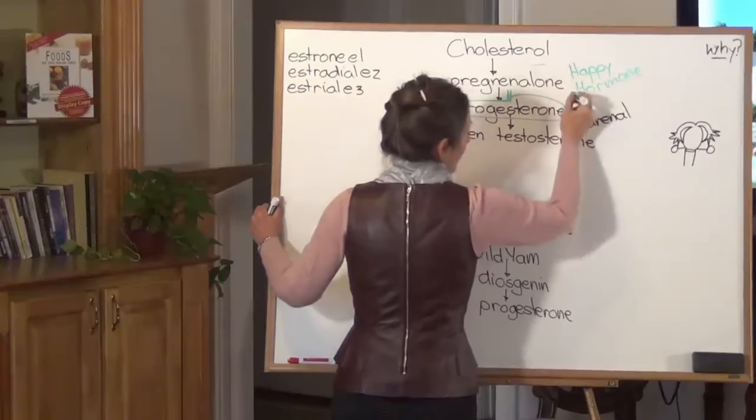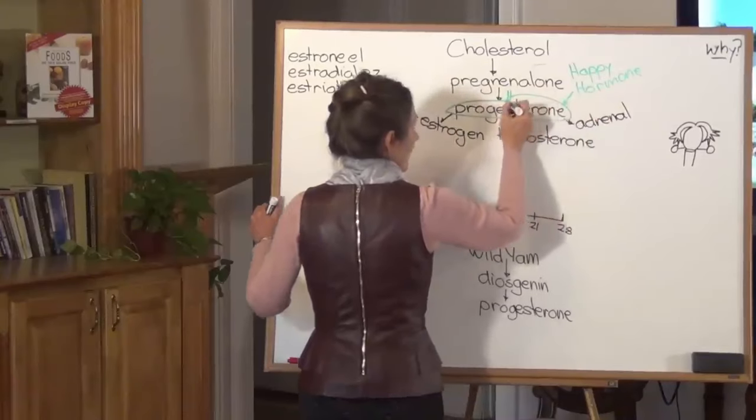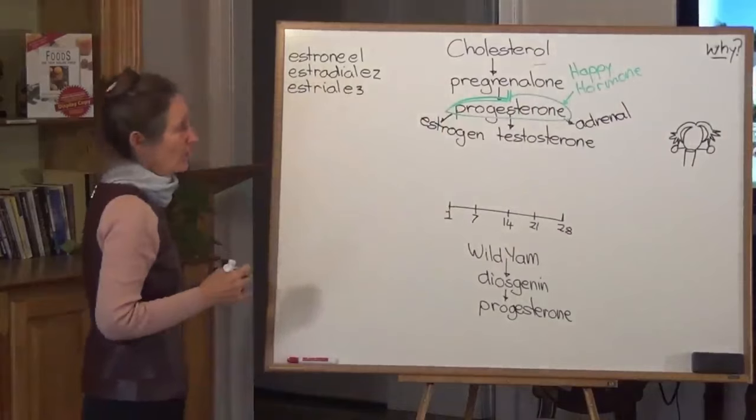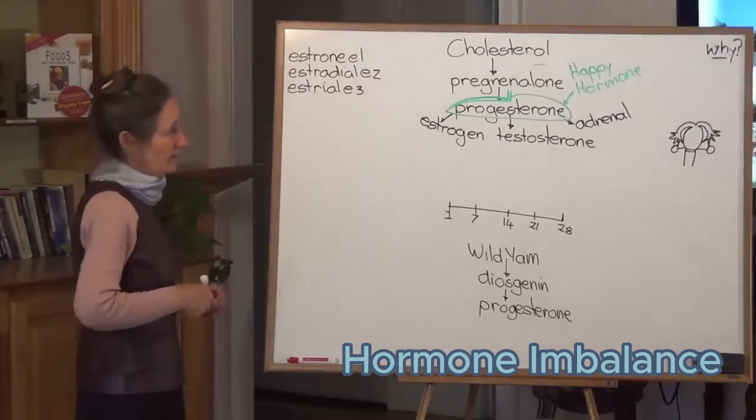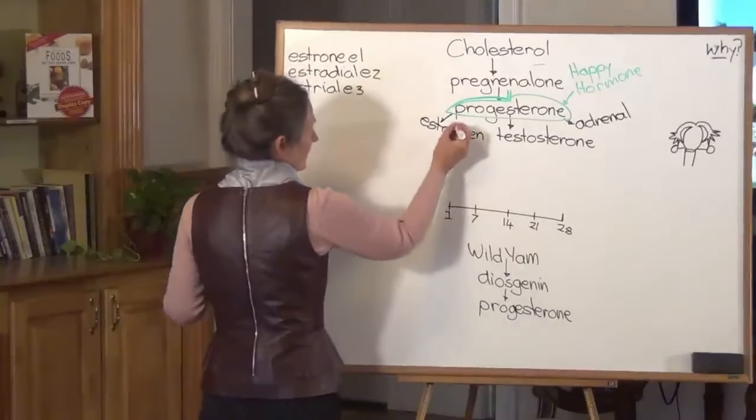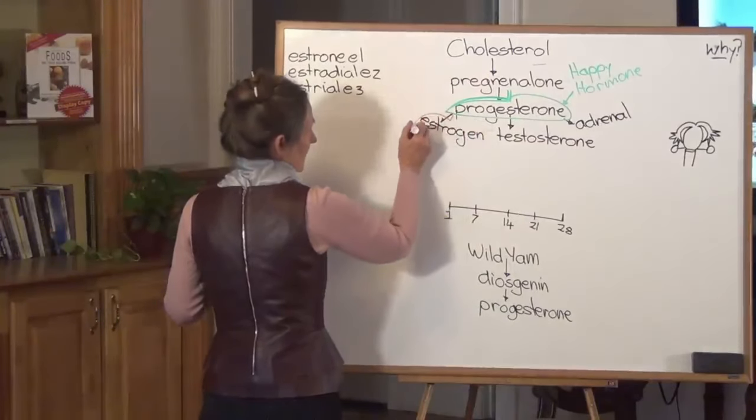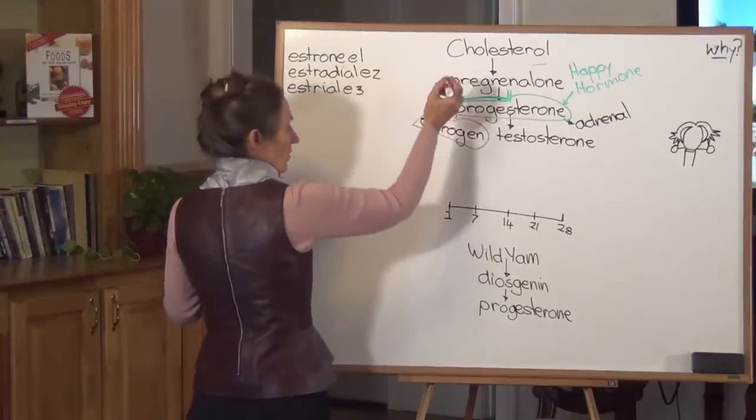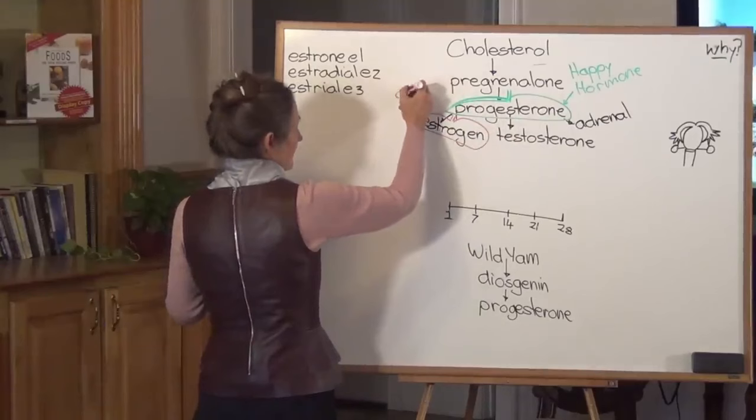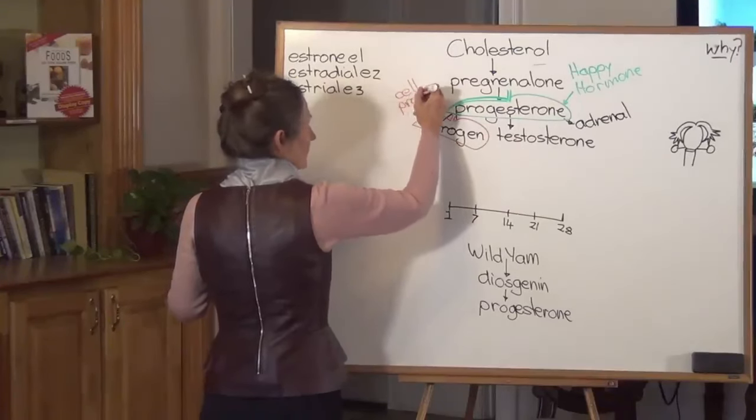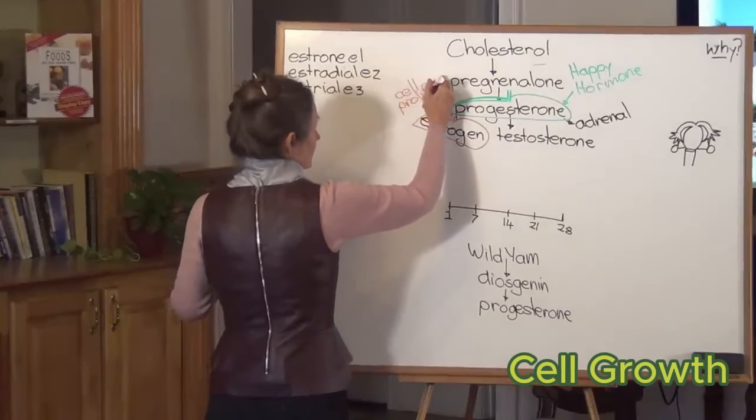You know when you've got a happy lady who's running the home, the whole family is happy. We've got a lot of unhappy ladies because of a hormonal imbalance. Estrogen is the other player in the dance of the hormones. And estrogen is going to be wearing a red dress. And estrogen's role in the body is that of a cell proliferator. In other words causing massive cell growth.